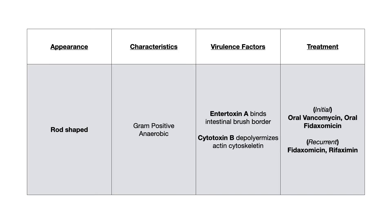Here's the summary: C. diff is rod shaped, gram positive, anaerobic. Virulence factors include enterotoxin A, which enters the enterocyte on the intestinal brush border and causes intracellular transport of both toxins, and cytotoxin B, which depolymerizes the actin cytoskeleton and releases endosomal contents. Treatment depends on episode: initial episode uses VF - vancomycin or fidaxomycin; future recurrences use FR - fidaxomycin then rifaximin. That is everything you need to know about C. diff.